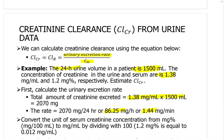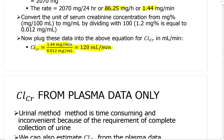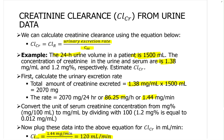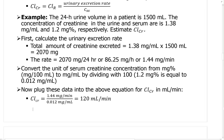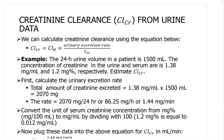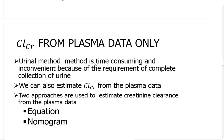This is how you calculate creatinine clearance. For creatinine clearance we have to know the urinary excretion rate of creatinine. This only applies if you want to determine creatinine clearance using urine data — that means you have to collect urine for 24 hours and measure the amount of creatinine in it. It's a time-consuming and inconvenient process.